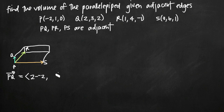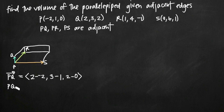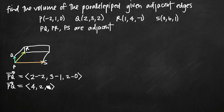Then we take the y component from Q, which is 3, and subtract the y component from P, which is 1. Then the z component minus the z component: 2 minus 0. When we simplify, the vector PQ is defined by its components: 2 minus negative 2 is 4, and then we have 2 and 2. So the vector PQ is (4, 2, 2).